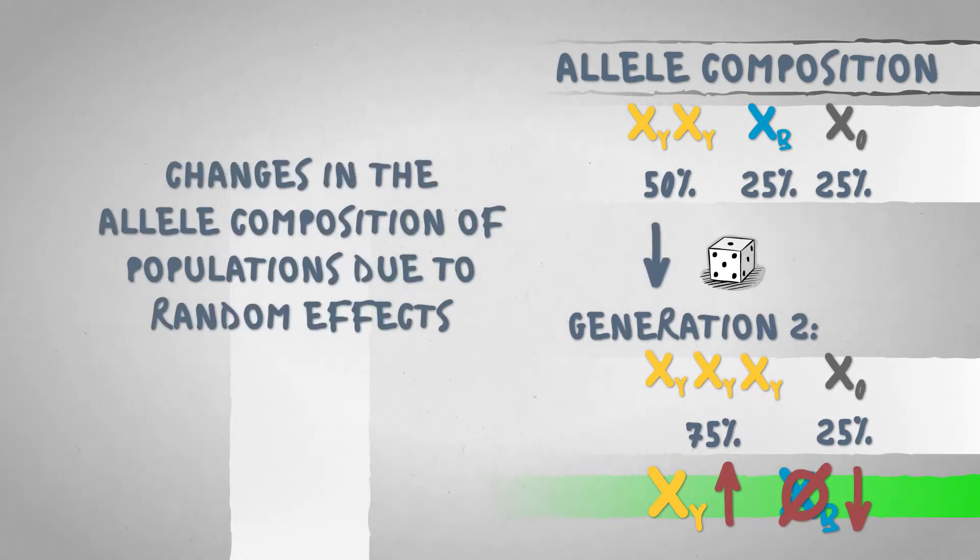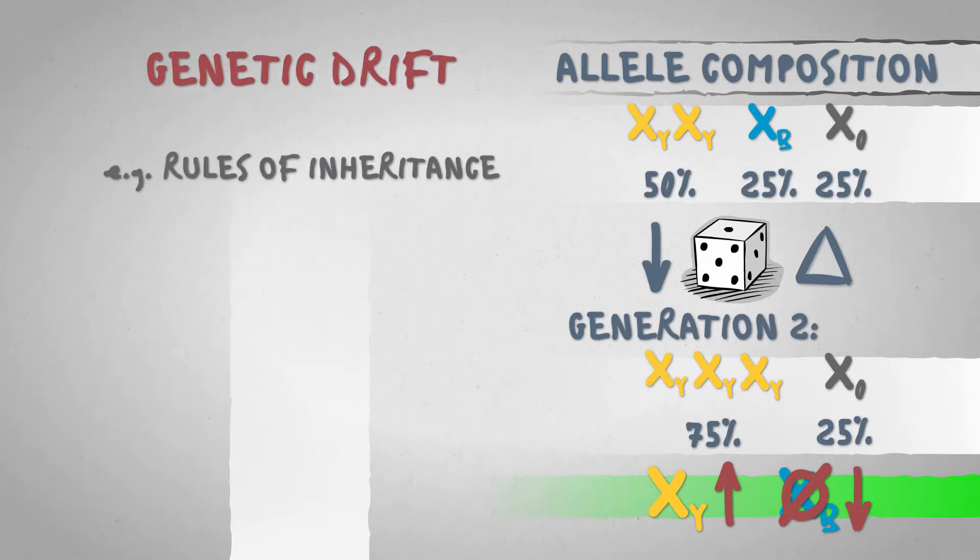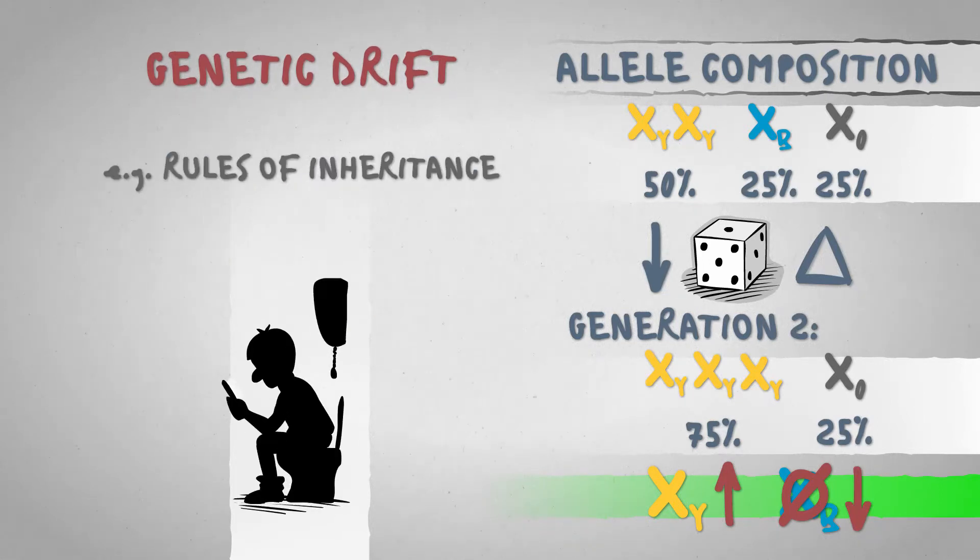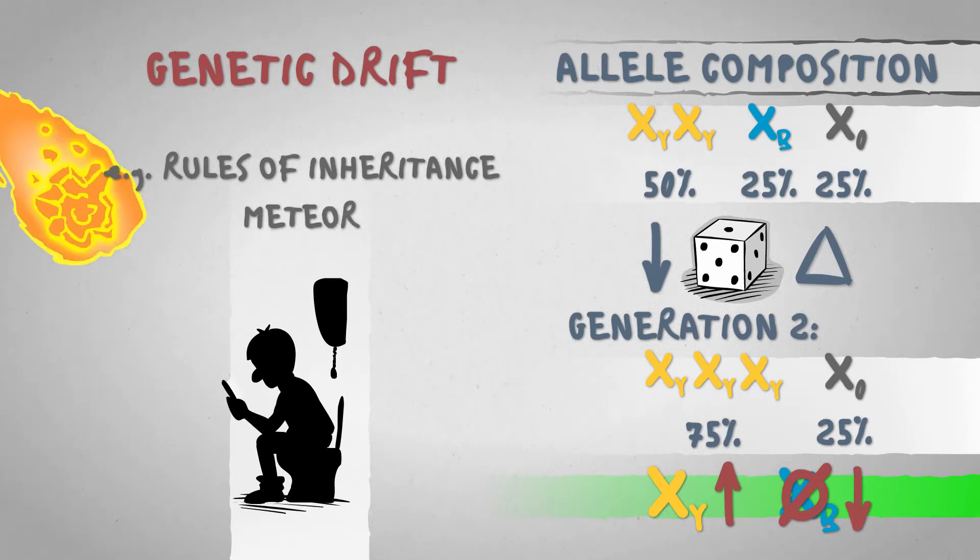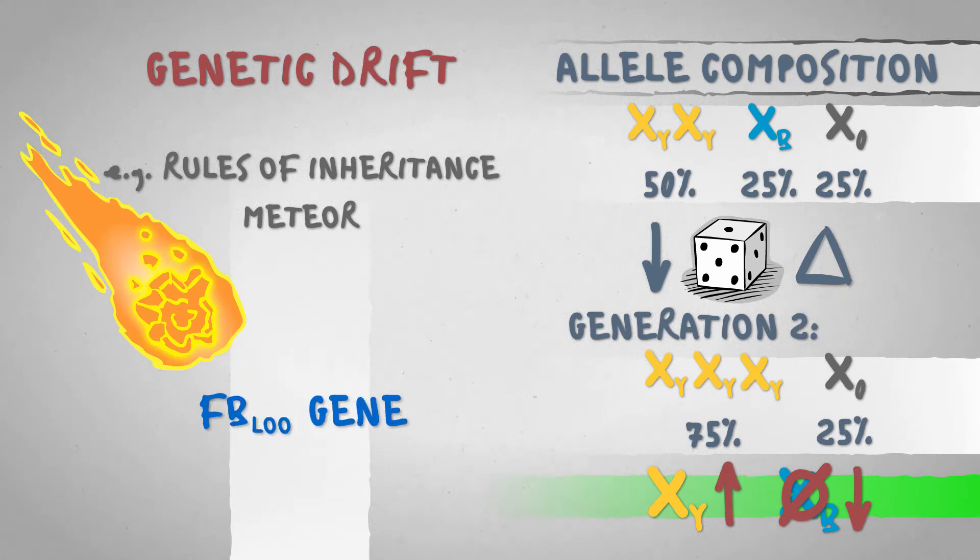The phenomenon of random events changing the allele composition of a population is called genetic drift. A fine example of it is the change due to the random inheritance of parental alleles, but other unavoidable events can lead to genetic drift as well. Let's say someone's sitting on the toilet, fiddling with Facebook on his phone, when suddenly a 3.5-ton comet drops on his head, taking his genes immediately out of the population.